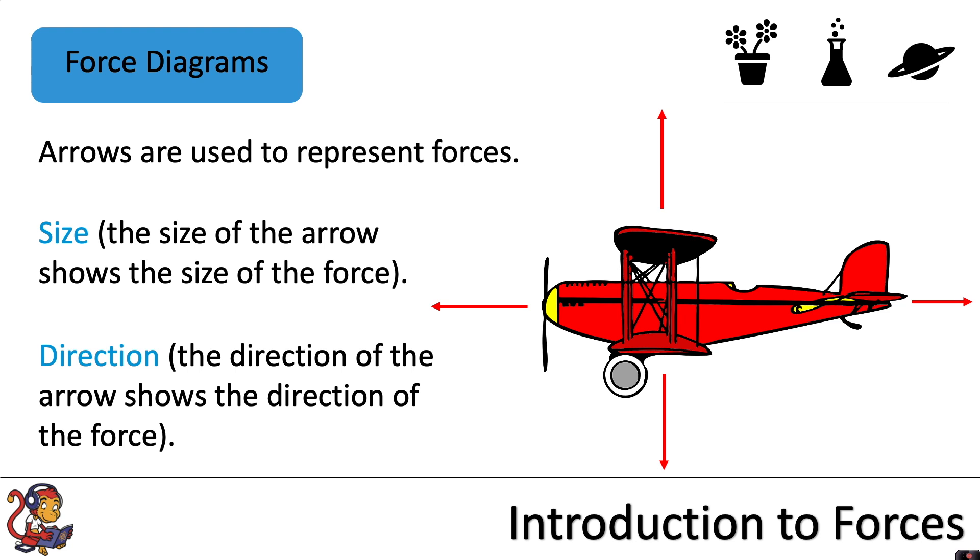So a force diagram might look something like this. It only shows the forces acting on one particular object. So in this case, the object is the plane. So if we label some of these forces, we might have thrust, which is pushing the plane forwards, provided by the engine.